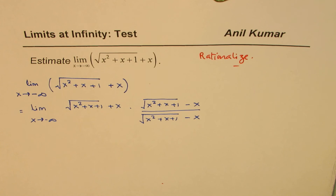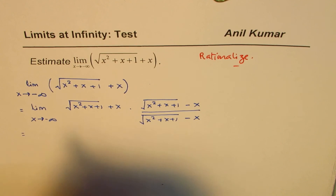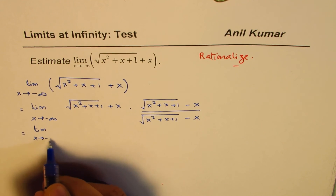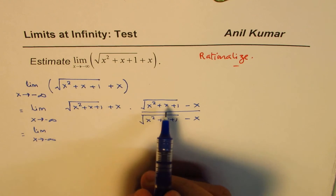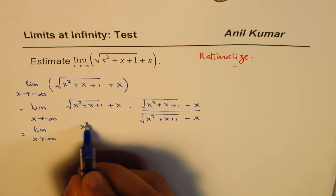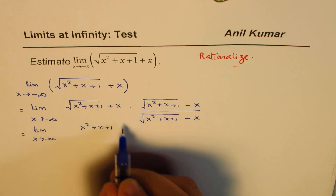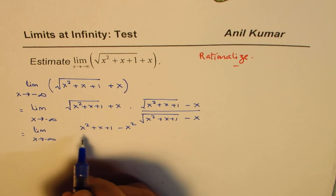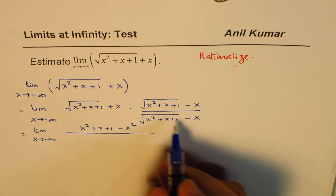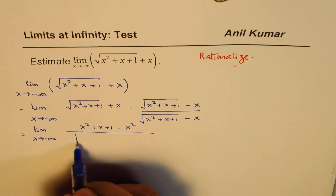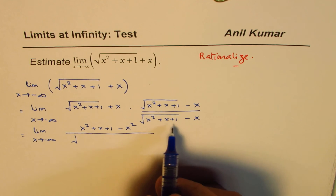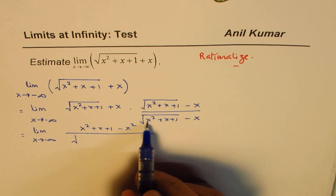That is how you rationalize. Now the numerator becomes a squared minus b squared: the square of the square root gives x squared plus x plus 1, minus x squared. That becomes the numerator. The denominator is square root of x squared plus x plus 1, minus x. Now let me take x squared common inside the square root.